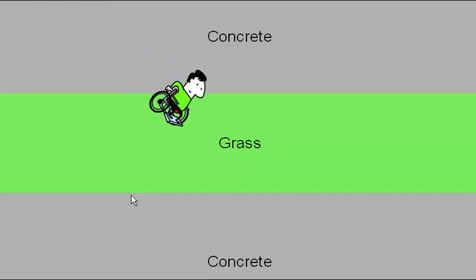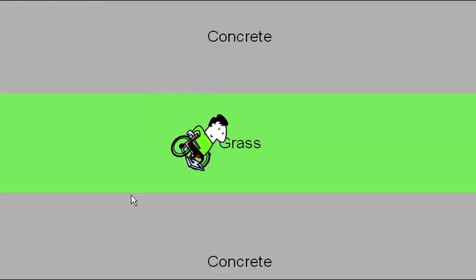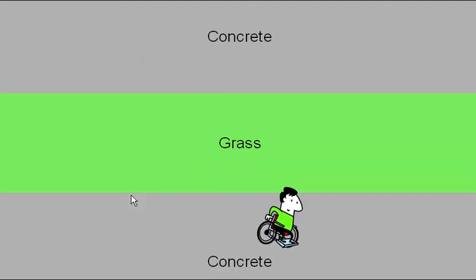The wheelchair turns as it meets the grass, travels more slowly over the grass, turns again as it meets the concrete and travels more quickly. The wheelchair has been refracted.